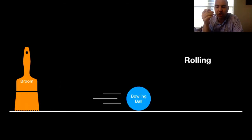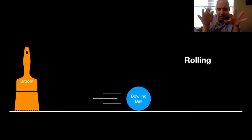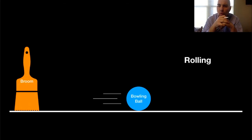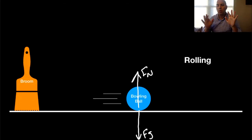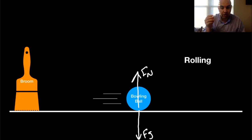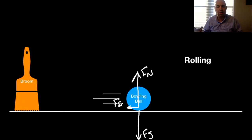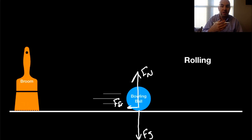Once the ball is rolling, think about this — before we had a perfect air hockey table with no friction. But if I roll a bowling ball down the hall, it's going to roll for a while but eventually come to a stop. Why? Because we have friction. We still have the normal force and the weight, but the broom is no longer pushing on the bowling ball. So we have friction between the ball and the ground — just a small amount — but that force due to friction acting to the left is going to slow it down. That's deceleration, or negative acceleration.